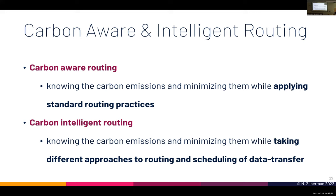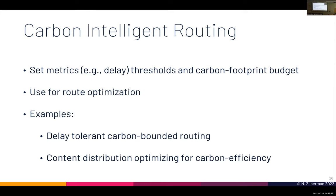In carbon intelligent routing, I also have information about carbon emissions, but I'm taking different approaches to routing and to scheduling of data transfers. I need to set metrics such as: I'm willing to pay a certain delay in order to get more carbon efficient routing, and I need to set a carbon footprint budget. I can play with the metrics but I have a defined set that I use for route optimization.